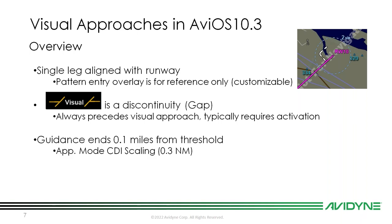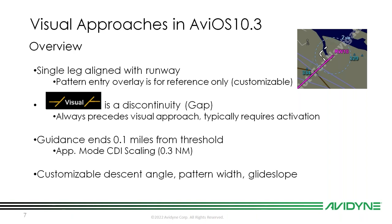If coupled to an autopilot, guidance will end a tenth of a mile from the defined runway threshold. Approach mode CDI scaling is 0.3 nautical miles for lateral guidance. The visual approach also offers customizable descent angles, pattern widths, and glide slopes, which I'll cover in more detail when we discuss FMS setup.